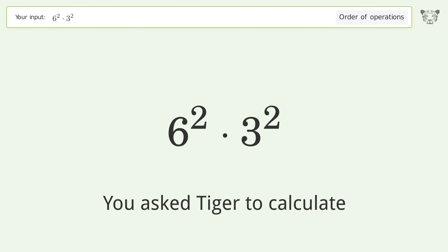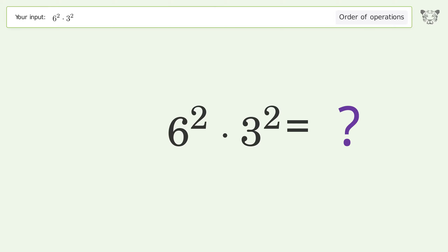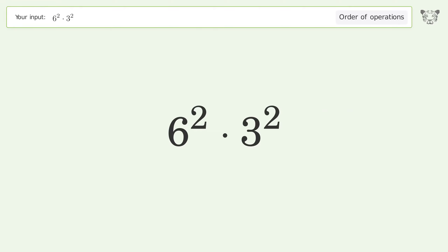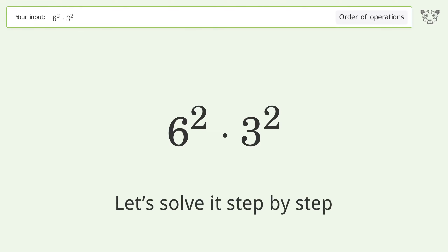You asked Tiger to calculate. This deals with the order of operations. The final result is 324. Let's solve it step by step.